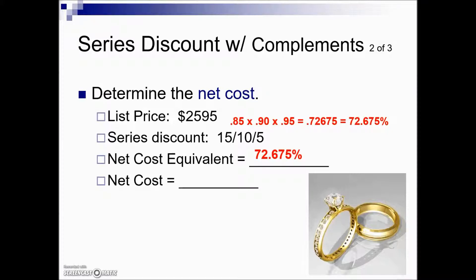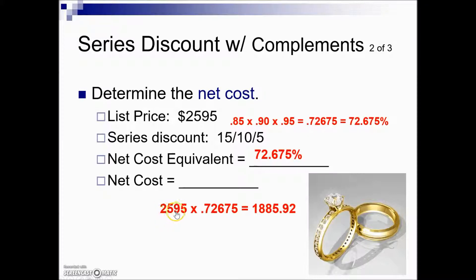Now we're set up to calculate the net cost. The net cost is the part, given this rate and the base which is our list price. To find the part, we take base times rate, which gives us our net cost for this item.